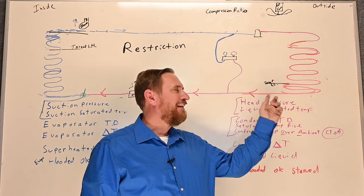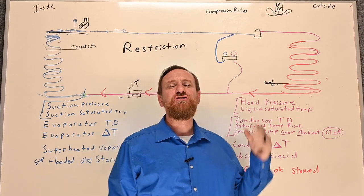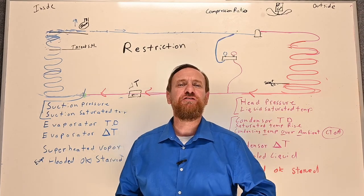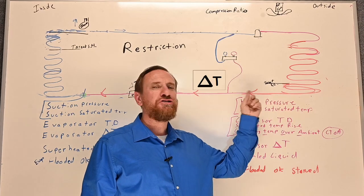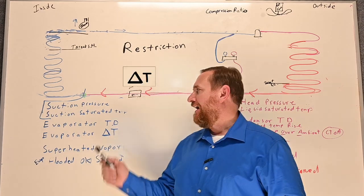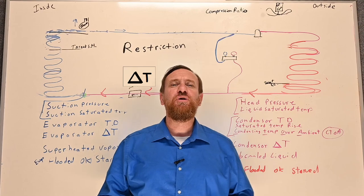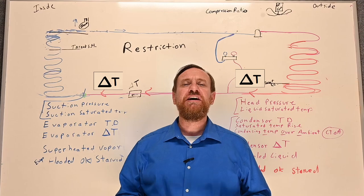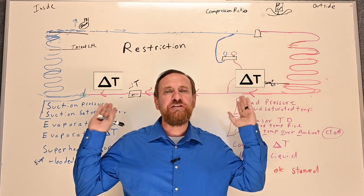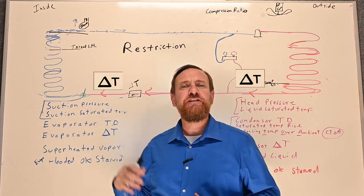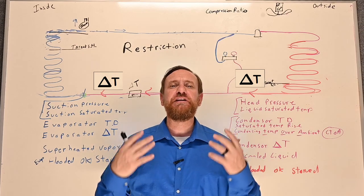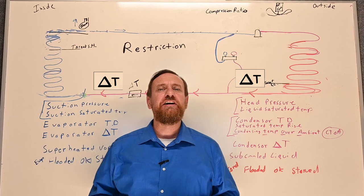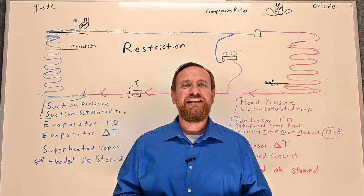What about a liquid line service valve? If there's a restriction there, maybe somebody didn't open it all the way — we can take the cap off and see if it's fully open. We can also check temperature drops across multiple locations. I once found a restriction in a liquid line through a wall by checking the refrigerant temperature going into the wall versus coming out, and found a big temperature difference, which also indicated a pressure drop. We cut the wall open and found a carpenter had kinked the line.